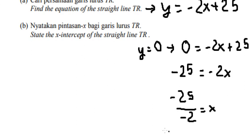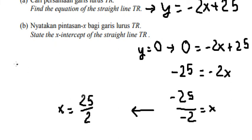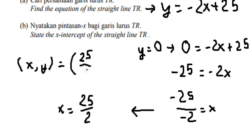Dividing both sides by negative 2, we get x equals 25 over 2. So the x-intercept point is (25/2, 0). That is the end — thank you for watching, I'll see you soon.